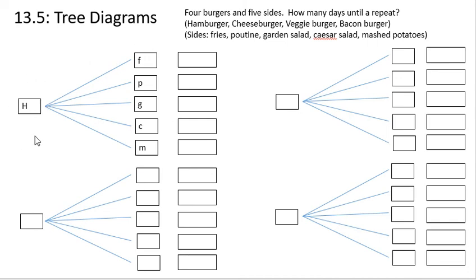The capital H stands for hamburger. The F for fries. The P for poutine. The G for garden salad. The C for Caesar salad. And the M for mashed potatoes.